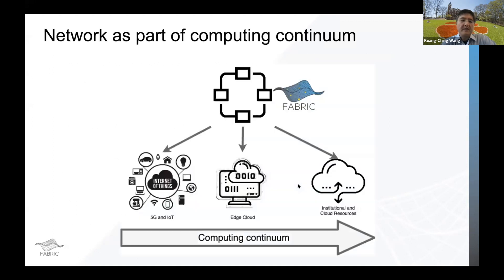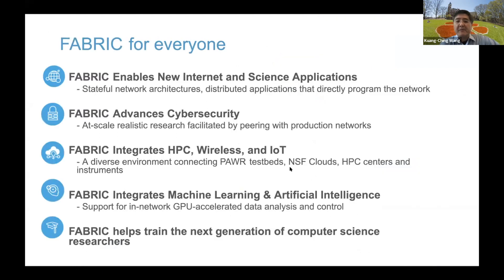We're really thinking about the network as a computing continuum. As we link all these different elements, computing in every part of the network is a major component being done at different scales and different form factors. With the FABRIC system, we expect to engage with all the different communities and support different needs with the same infrastructure, while pushing the boundary of performance — very high capacity and throughput, but also with programmability down to the very low level of visibility.